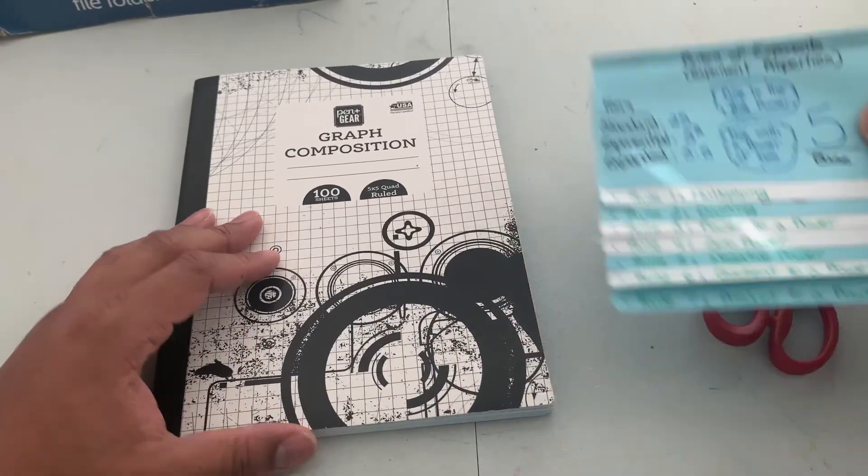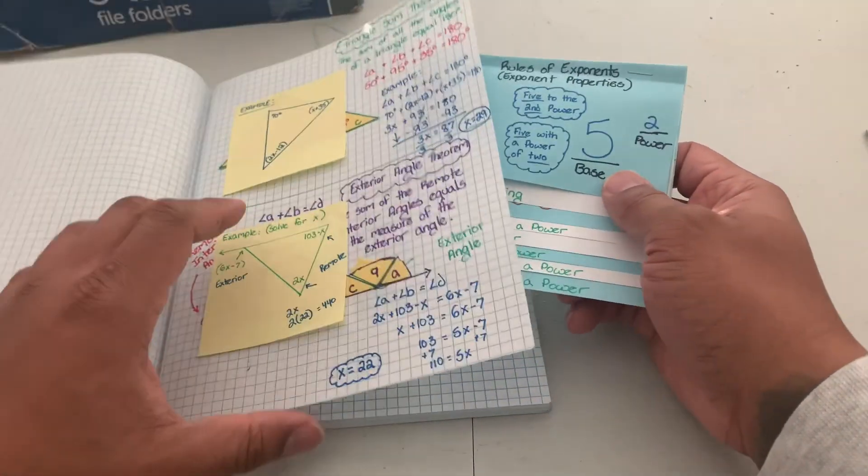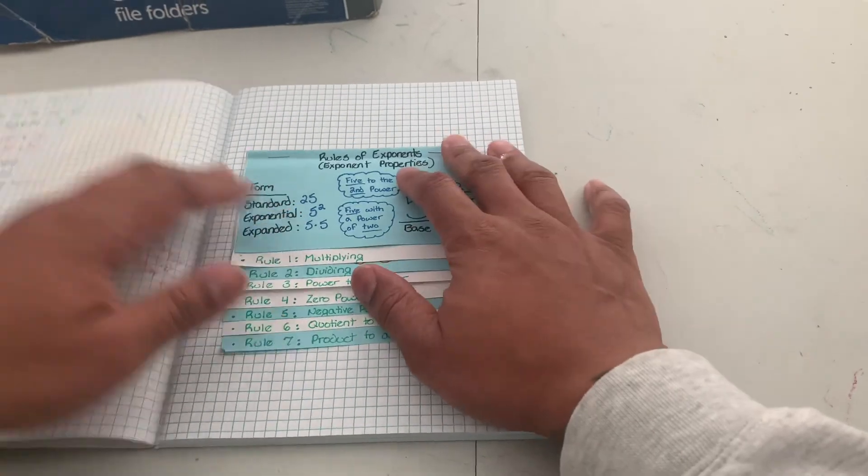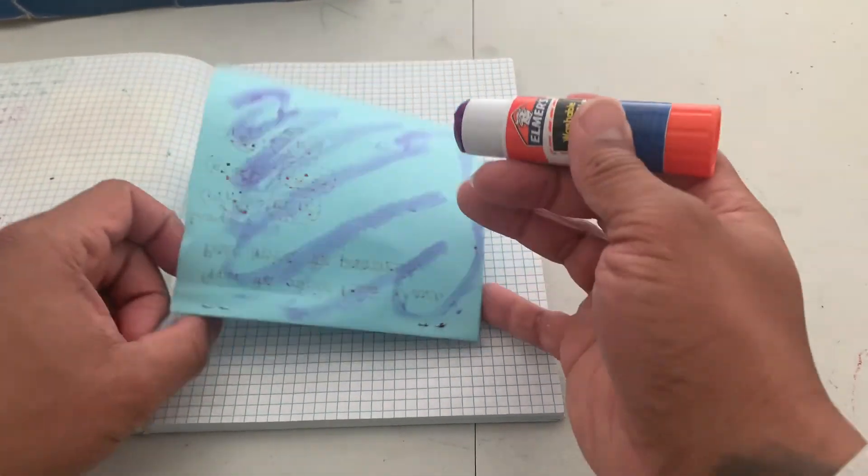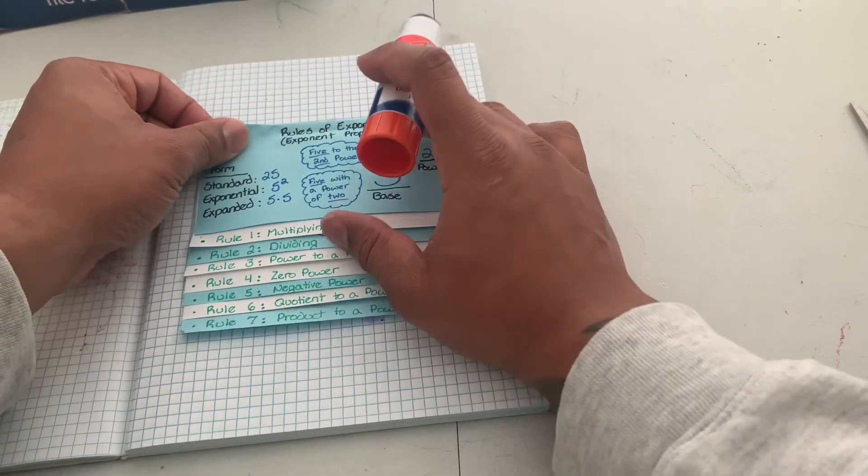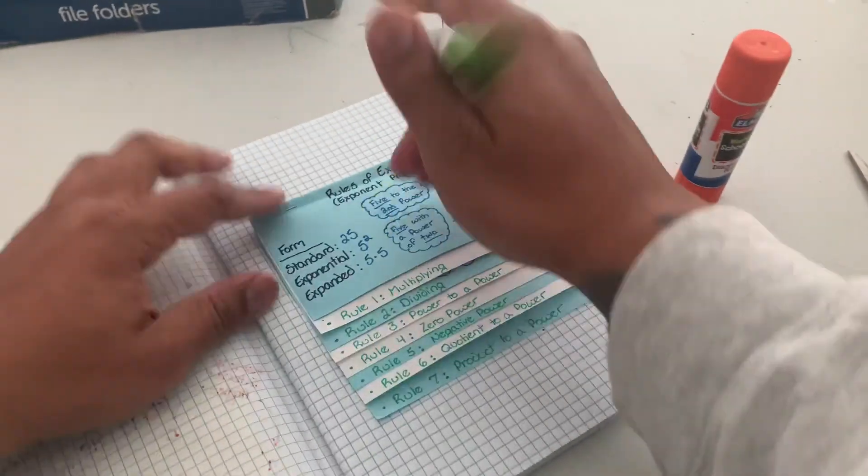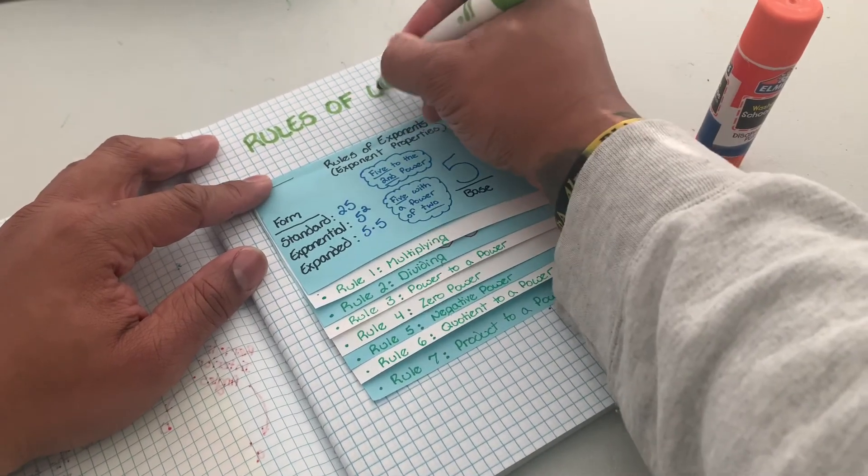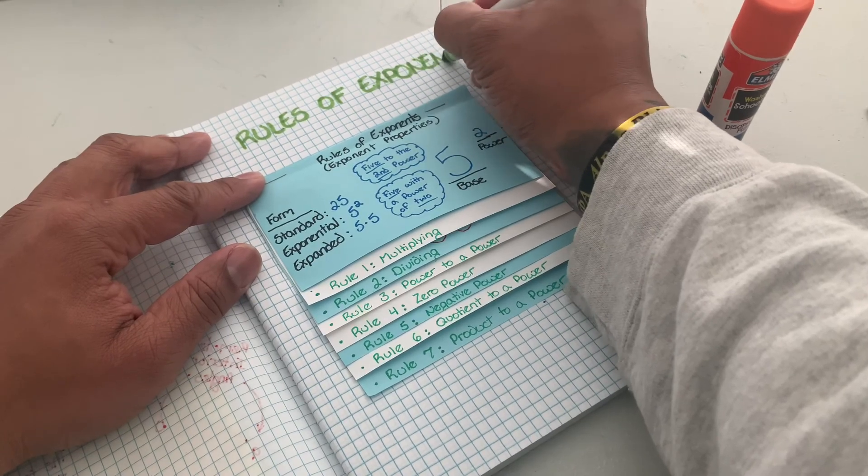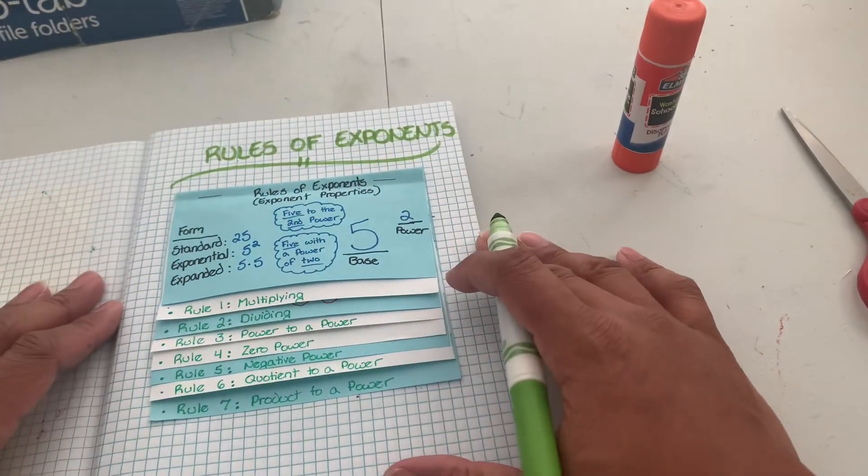So your final step is to take your graphic organizer, complete with everything, and put it on an empty page, probably the next page after the triangles. Glue it in, and then put rules of exponents. And voila, and voila.